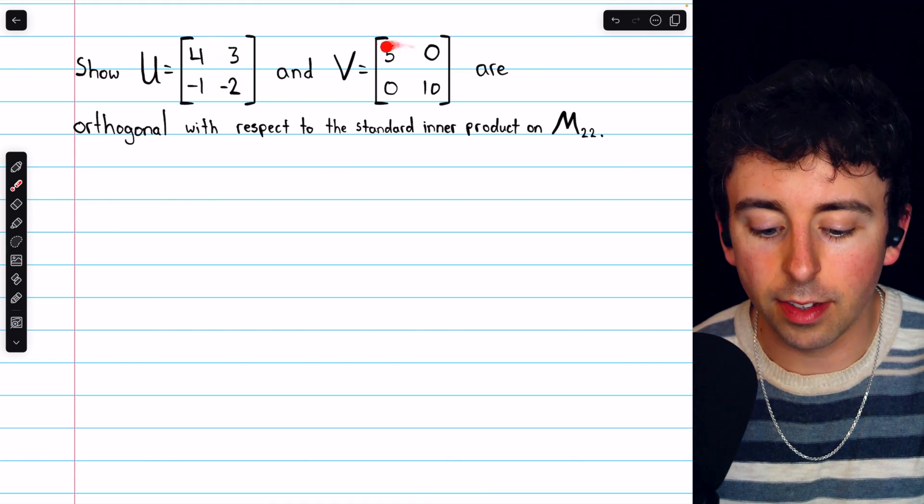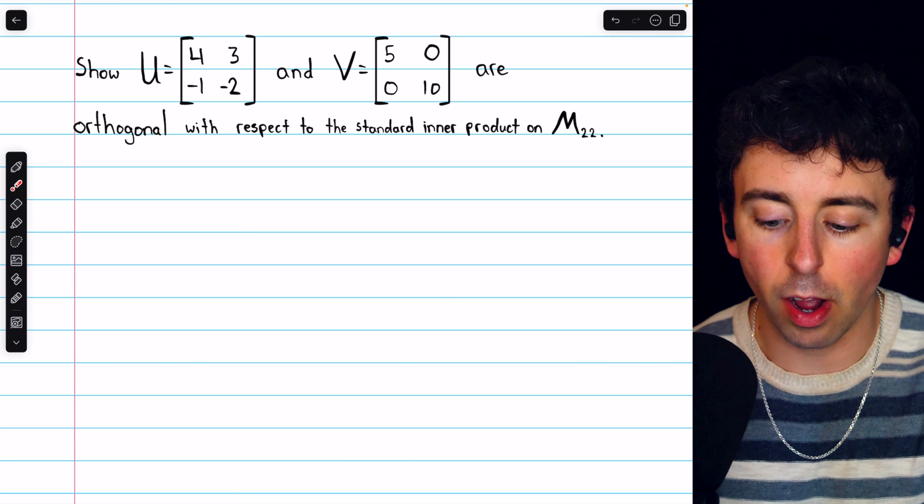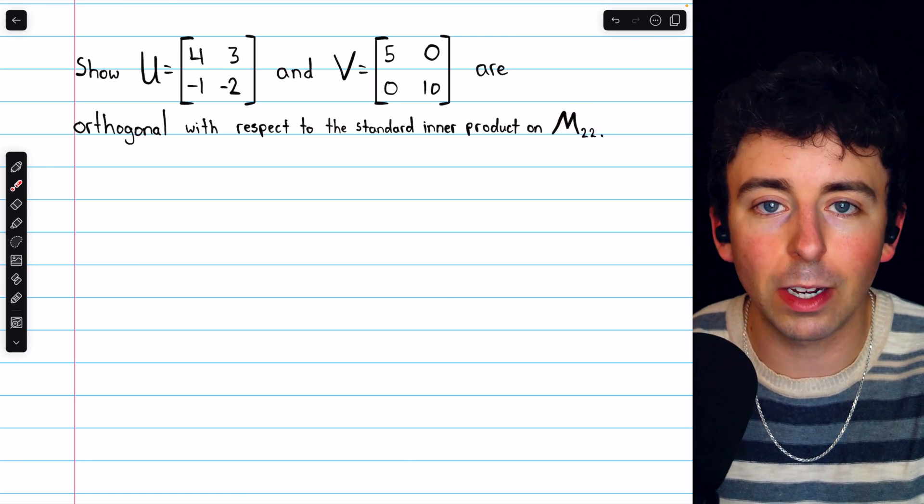Let's show that these two matrices U and V are orthogonal with respect to the standard inner product on the space of 2 by 2 matrices.